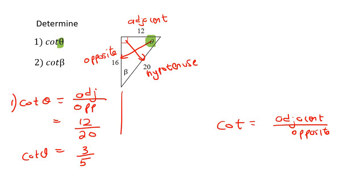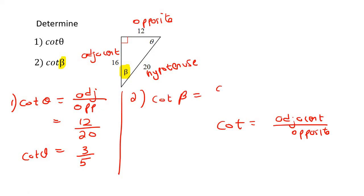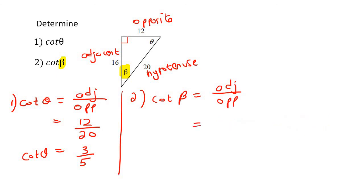For number two, you have to restart all over again — scratch all of this out. You can leave the hypotenuse because that's always opposite the 90. Now we're looking at the beta angle. The one opposite that is called the opposite, and the other one is the adjacent. So to find cot of beta, that's going to be adjacent over the opposite, which is 16 over 20.